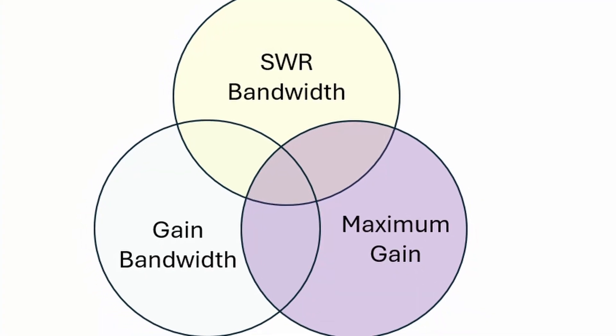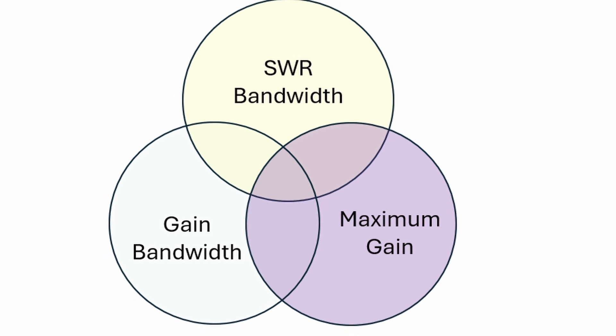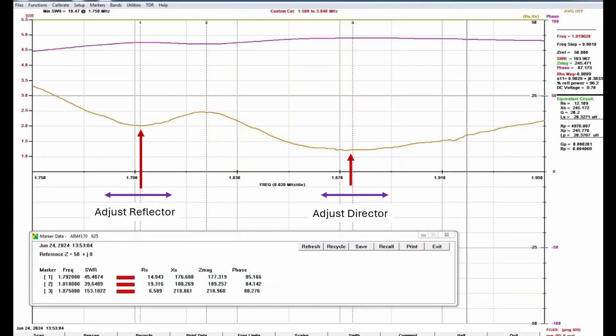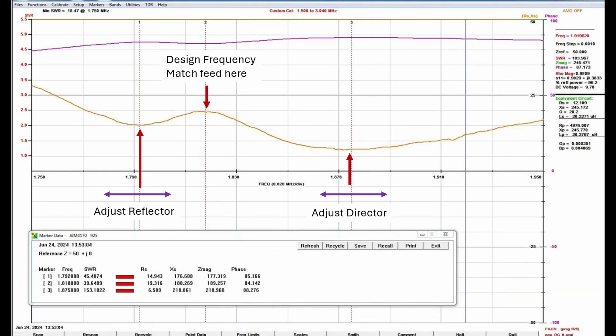Look, each operator will have their own design goals, but whatever you choose, it's easy to implement in the field. Just put your analyzer on the driver and dial in the reflector and director dips to where you want them. Then tune the driver near the R peak between those two dips.